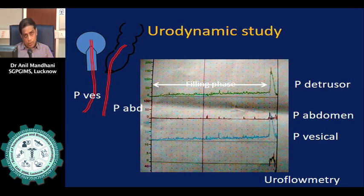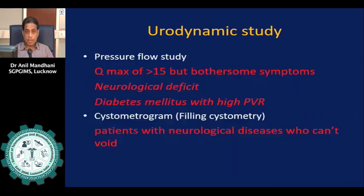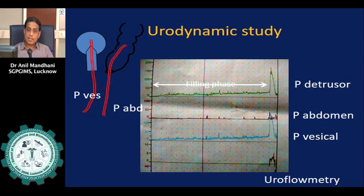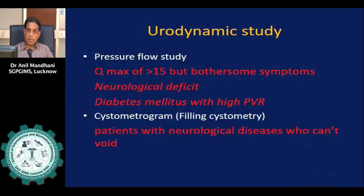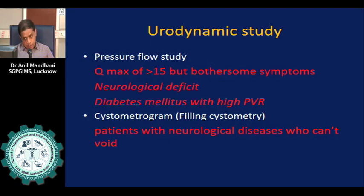If a patient is not bothered by his symptoms and as a physician you find no absolute indication for surgical treatment, then you would not treat him. This is called the quality of life index, which you need to assess alongside the AUA symptom score.